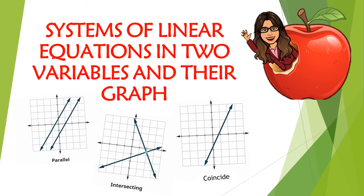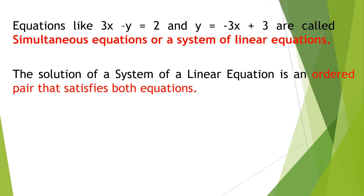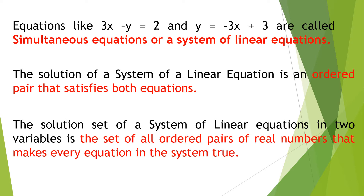Hi everyone! Our next lesson is about systems of linear equations in two variables and their graph. Equations like 3x minus y equals 2 and y equals negative 3x plus 3 are called simultaneous equations or a system of linear equations. The solution of that system is an ordered pair that satisfies both equations. The solution set is the set of all ordered pairs of real numbers that makes every equation in the system true.